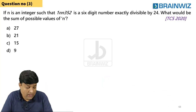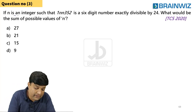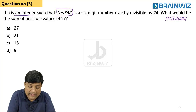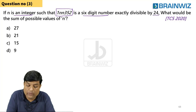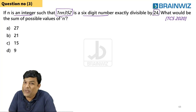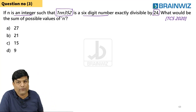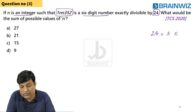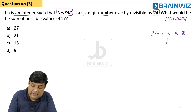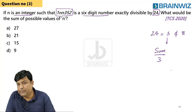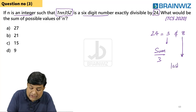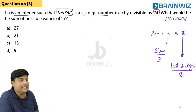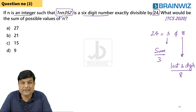Next question: if N is an integer such that 1NN352 is a 6-digit number exactly divisible by 24, find the sum of all possible values of N. To find divisibility of 24, we check its co-primes: 3 and 8. So the number must be divisible by both 3 and 8. For divisibility by 3, the sum of digits must be divisible by 3. For divisibility by 8, the last 3 digits must be divisible by 8. We need to check both conditions.